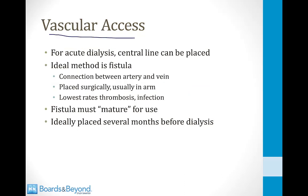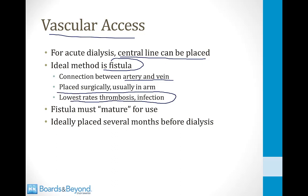Vascular access is critical for dialysis patients. A central line can be placed for acute renal failure, but these develop infections and blood clots and don't last. The ideal method is an arteriovenous fistula — a surgical connection between an artery and a vein, usually in the arm — with the lowest rates of clotting and infection. The fistula must mature over several months, so nephrologists plan it well before dialysis is needed.